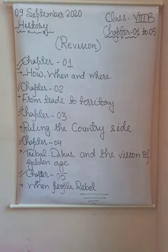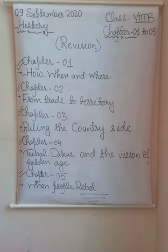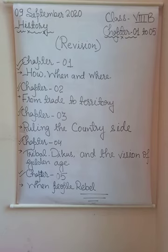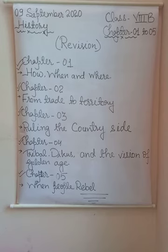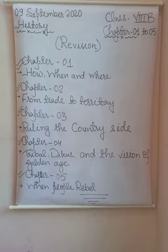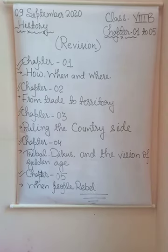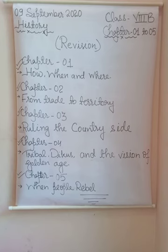In 1801, a subsidiary alliance was imposed on Awadh. In 1856, it was taken over in the name of ensuring proper administration under British rule. Finally, in 1856, Governor General Canning decided that Bahadur Shah Zafar would be the last Mughal king.